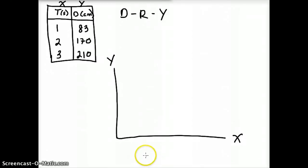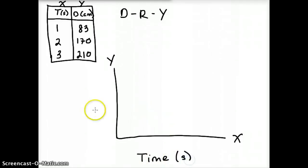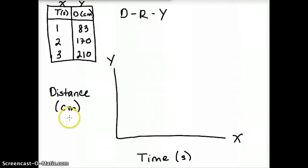The next thing we're going to do is label the x and y-axes. For the x-axis, we have time in seconds — make sure to include both the label and the unit. Same thing with the y-axis: the y-axis is the distance in centimeters, so we'll label that 'distance' and don't forget to include the unit, centimeters.